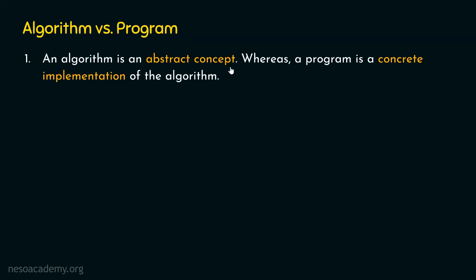An algorithm is simply an abstract concept — an idea that we may write on a piece of paper for us to understand. Whereas a program is a concrete implementation of the algorithm, which means a program is implementable. It is the implementable form of the algorithm that we write for a computer to execute. This is the difference between an algorithm and a program.